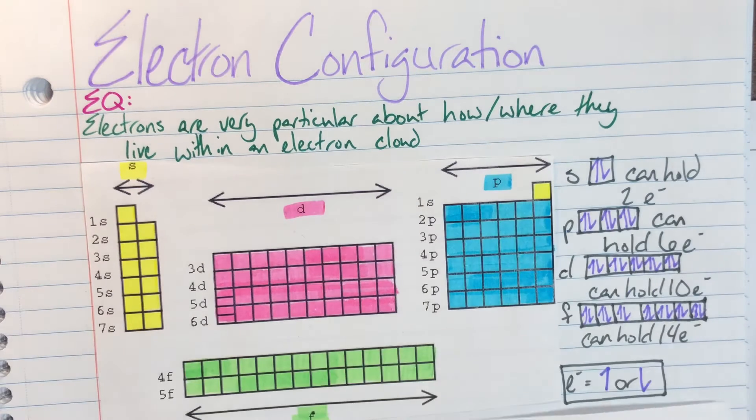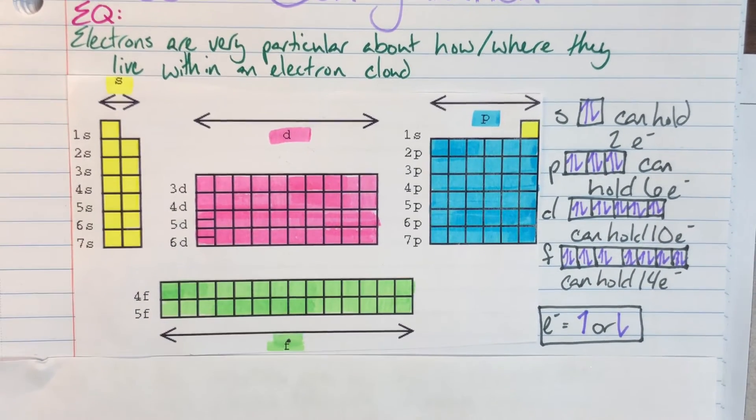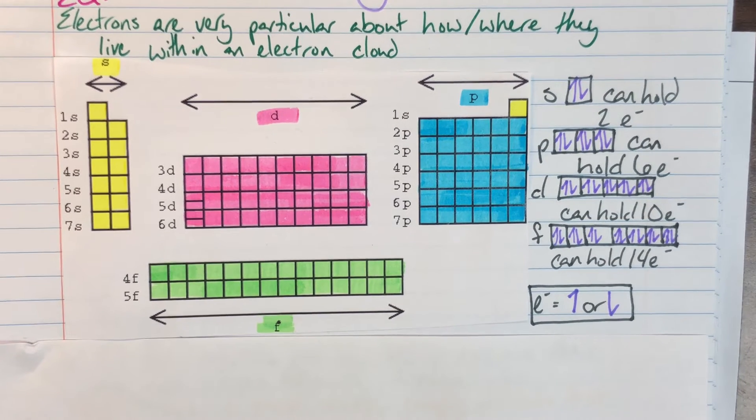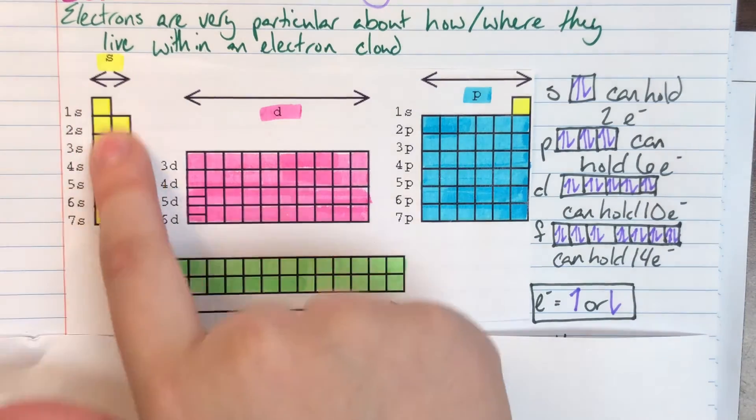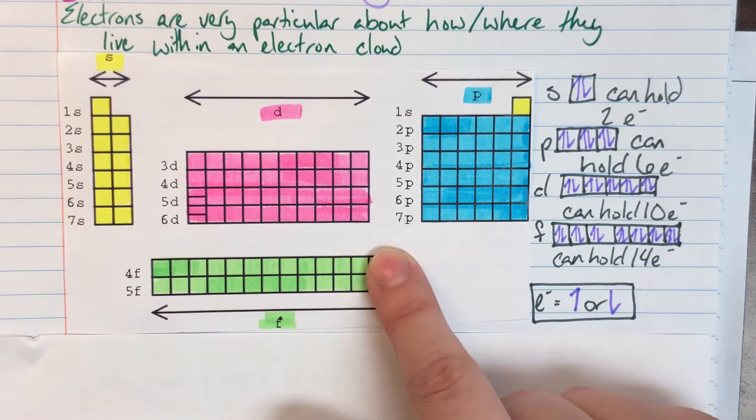Here we have a very shortened periodic table and we have the different orbitals within the periodic table highlighted in different colors. First you have the S block, we have the P block, we have the D block, and we have the F block.